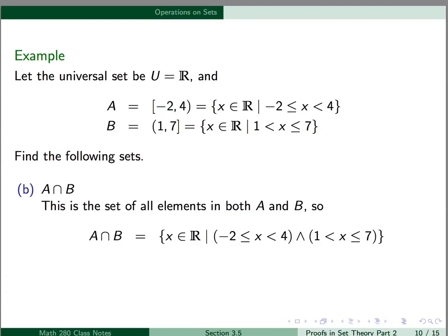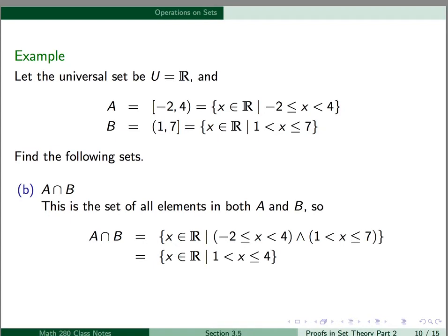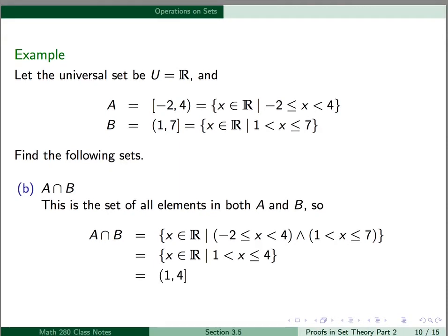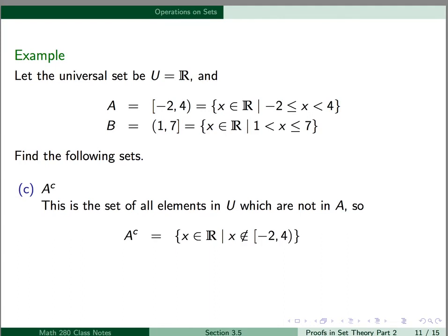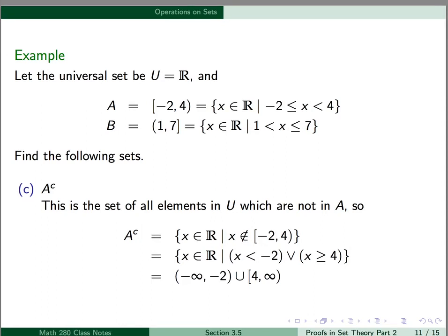A intersect B is the set of all elements in both A and B, so this is the set of real numbers satisfying both inequalities. Drawing the sets on a number line and finding where they overlap, this gives the set of all real numbers satisfying 1 < x ≤ 4, written in interval notation as (1, 4]. A complement is the set of all real numbers not in A, so not in [-2, 4). This is the set of all real numbers x satisfying x < -2 or x ≥ 4, which in interval notation is (-∞, -2) union [4, ∞).